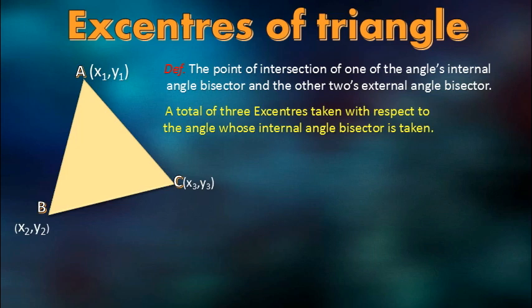You must note that there will be a total of three excenters of a triangle. If we are considering the internal angle bisector for triangle angle A and the external angle bisectors for the other two angles, then we can have an excenter. We can also have excenters when we are considering angle B or angle C for the internal angle bisector. So there must be three excenters for a triangle.